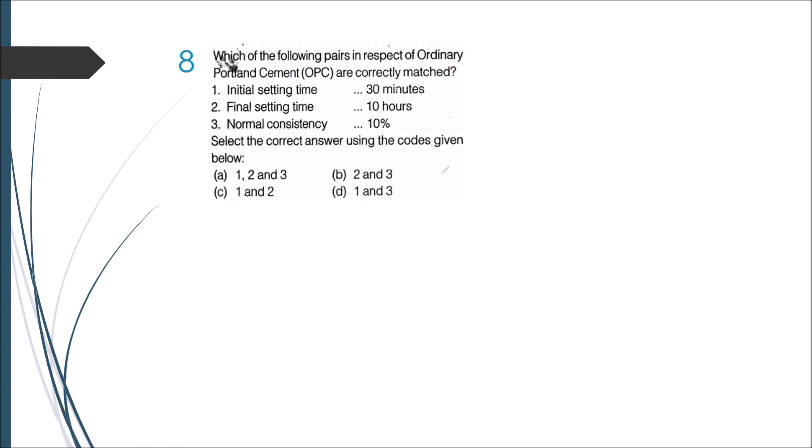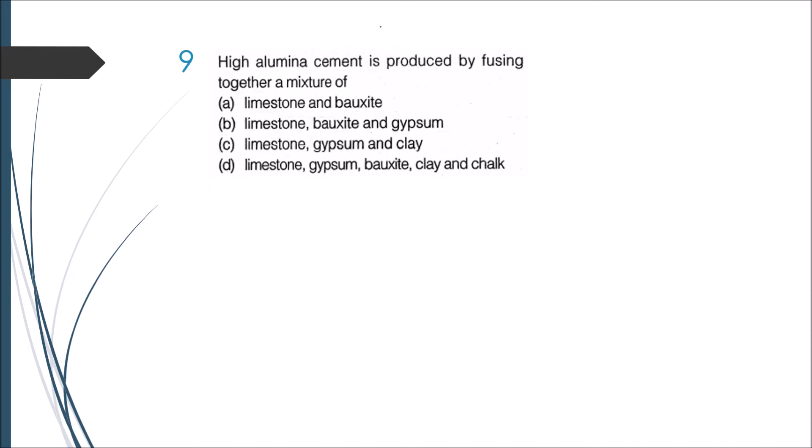Next is: which of the following pairs in respect of ordinary Portland cement are correctly matched? Initial setting time 30 minutes - it is correct. Final setting time 10 hours - correct. Normal consistency 10 percentage - which is wrong. Normal consistency for ordinary Portland cement is 30 percentage. Therefore this one is wrong, whereas option 1 and 2 are correct. Therefore my answer is option C.